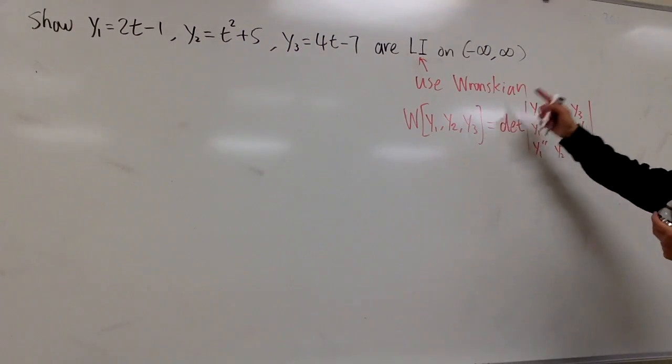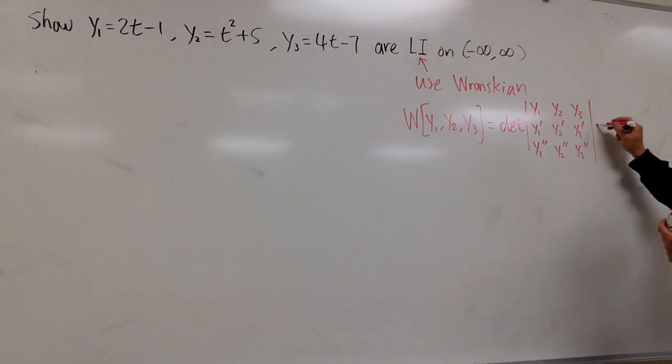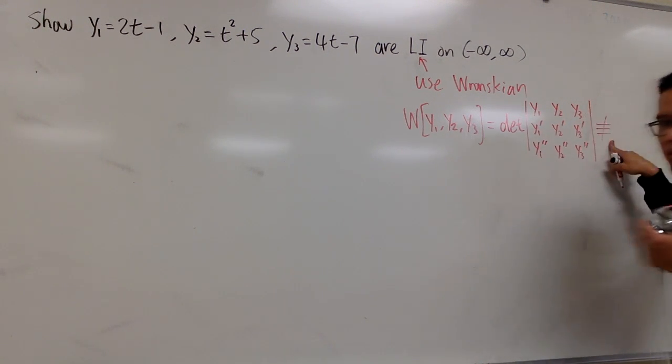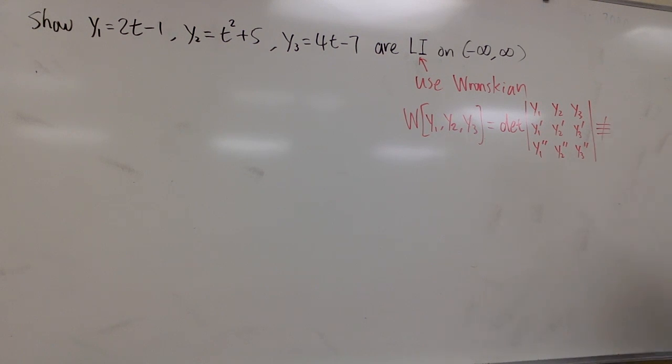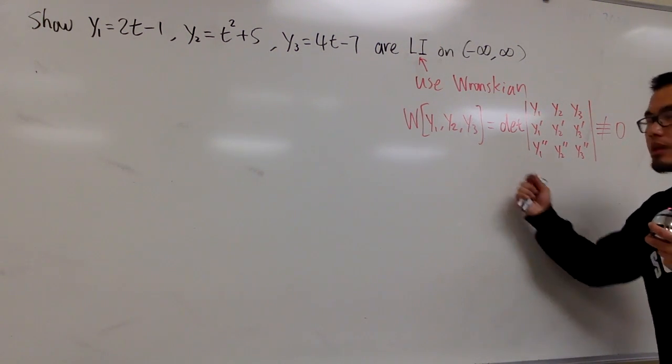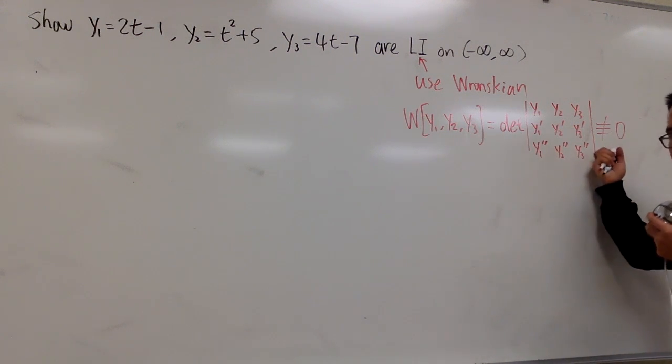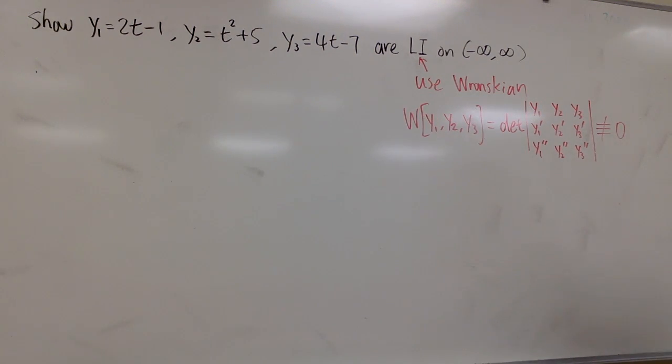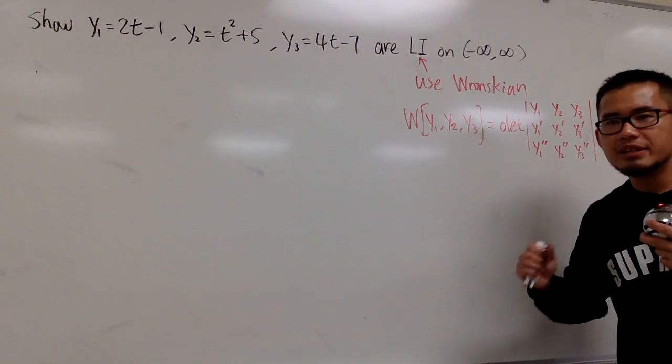And you are going to work out this determinant of this three-by-three matrix. At the end, if you can show that this right here is not always—or you can also interpret this as you want to show this is not identically equal to, that's why I put down the triple line right here. You want to show this is not identically equal to zero. From here, if you can show this, it's not identically zero, you can say that the functions are LI, linearly independent.